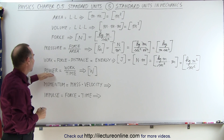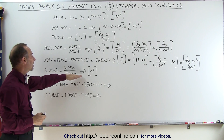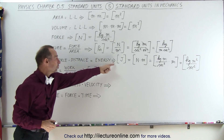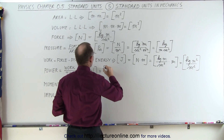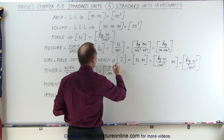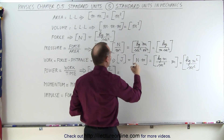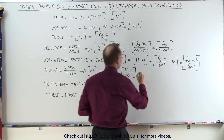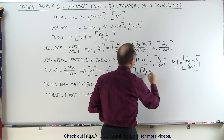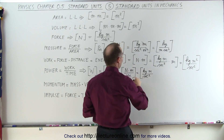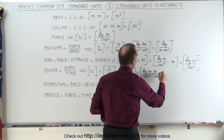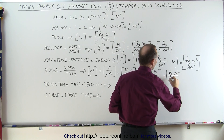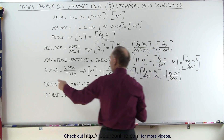Power is work divided by time, expressed in watts. A watt is therefore a joule per second. Since joules equal newton times meters, this can be written as newtons times meters divided by seconds. Substituting newtons as kilograms times meters per second squared, and simplifying, this becomes kilograms times meters squared per second cubed — the units for power.